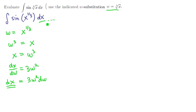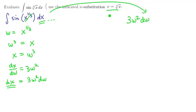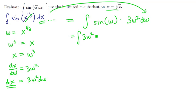Since dx always fits, we'll replace dx with the more complicated expression 3w squared dw — that's the forcing part. The sine of x to the one-third can be replaced with sine of w. So our new integral becomes the integral of 3w squared times sine of w dw. This is the result of forcing a substitution; we made it more complicated than before.